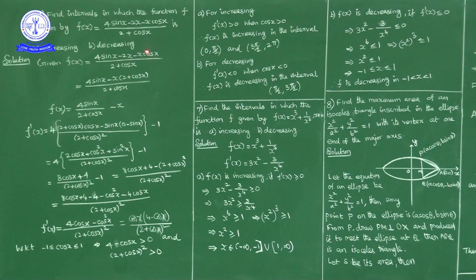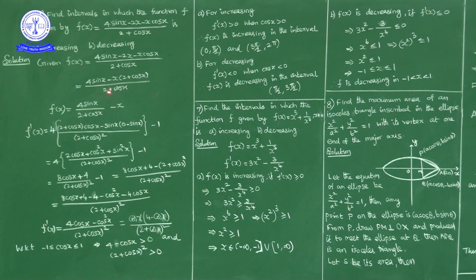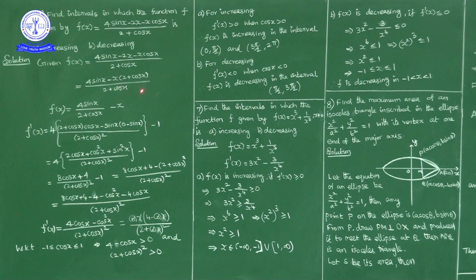From the two terms in the numerator, −2x − x cosx, I will take −x common. So we get: 4sinx − x(2 + cosx) all over (2 + cosx). This splits into 4sinx/(2 + cosx) minus x(2 + cosx)/(2 + cosx). The (2 + cosx) cancels, giving f(x) = 4sinx/(2 + cosx) − x.